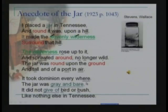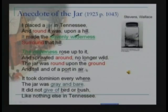The jar on the hill dominates everything — it took dominion everywhere. But the jar was gray and bare; it did not give off bird or bush. So up to 'it took dominion everywhere,' the jar seems significant, central, and influential. But then in the last three lines, the speaker admits another aspect of the jar: that the jar is nonproductive.